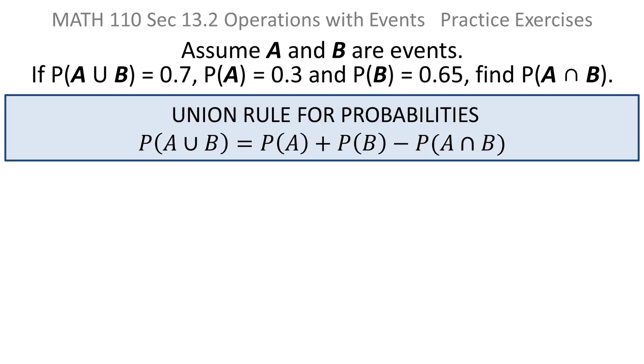This problem is extremely easy if you just remember the union rule for probabilities says the probability of A union B is the probability of A plus the probability of B minus the probability of A intersect B.